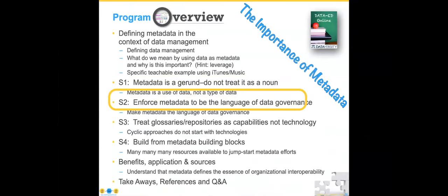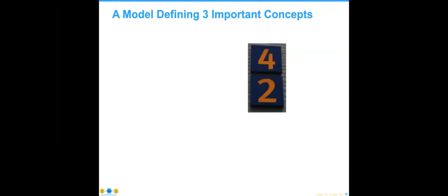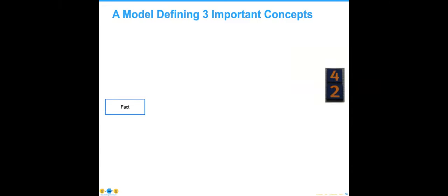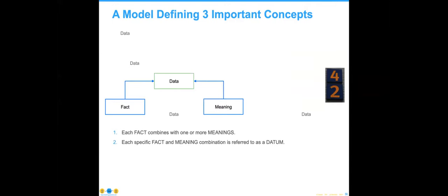Let's move on to strategy number two: metadata must be the language of data governance. Understanding is critical. Let me take you briefly through a model of what data is. I'm going to tell you that 42 is not Jackie Robinson's jersey number — it is in fact the meaning of life, the universe, and everything, from The Hitchhiker's Guide to the Galaxy. What I've done is give you a fact and pair that fact with a meaning. That is the definition of data: a fact paired with a meaning.